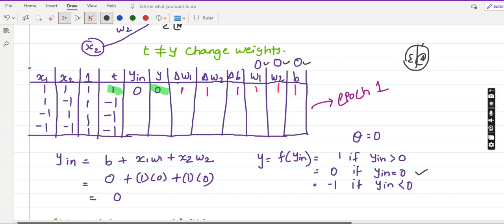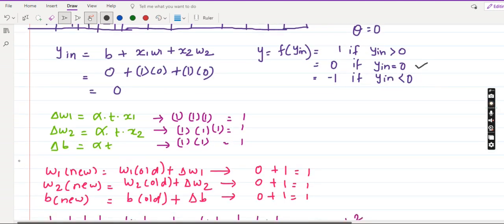Now what are my new weights? So w1 new is equal to w1 old plus delta w1. W2 new is equal to w2 old plus delta w2. And new bias, bias also changes, is equal to old bias plus the change in the bias delta b. So initial weights were 0. Now the change in the weights are all 1. So I'll add 1 here and my new weights become 1, 1, and 1.